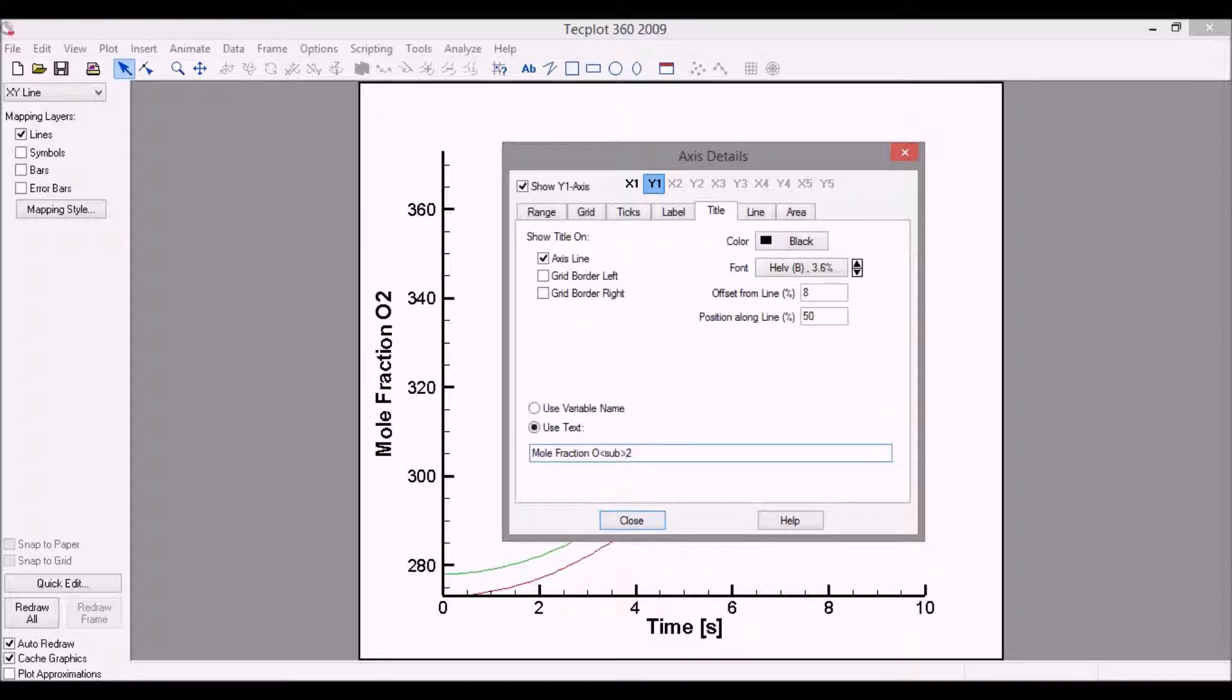So I can just enclose the two with these tags, sub in carrots, and then forward slash sub in carrots, and then you can see that it goes to a subscript.